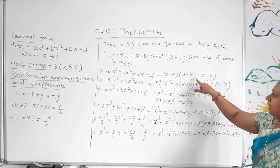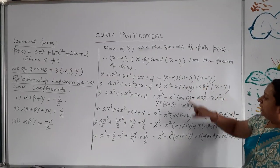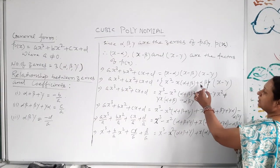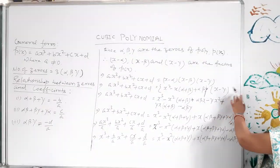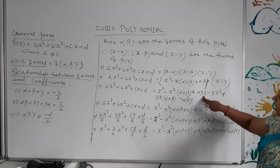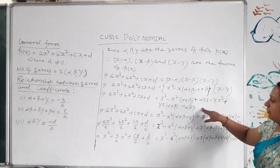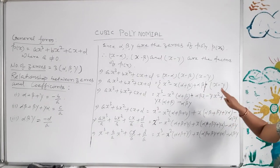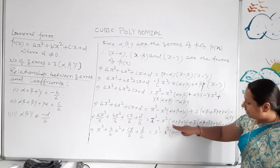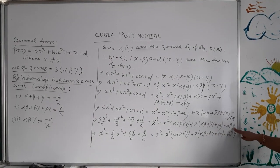Multiplying (x − alpha) and (x − beta) gives x² − (alpha + beta)x + alpha·beta. Then multiplying by (x − gamma) gives x³ − (alpha + beta)x² + alpha·beta·x − gamma·x² + gamma(alpha + beta)x − alpha·beta·gamma. After collecting and sorting terms, we get x³ − (alpha + beta + gamma)x² + (alpha·beta + beta·gamma + gamma·alpha)x − alpha·beta·gamma.